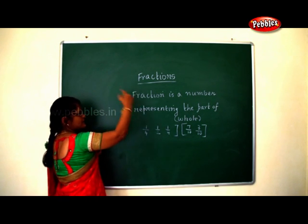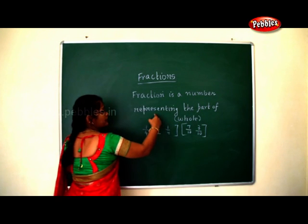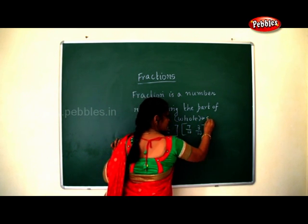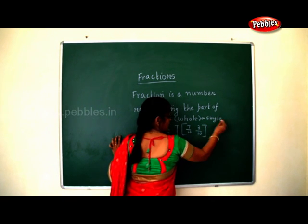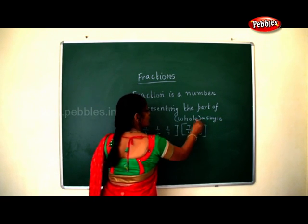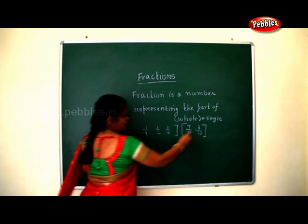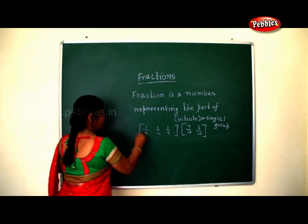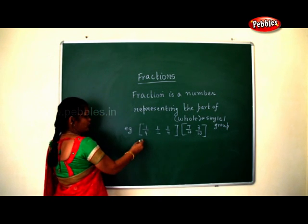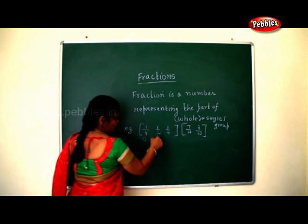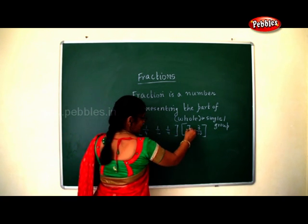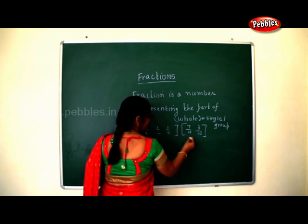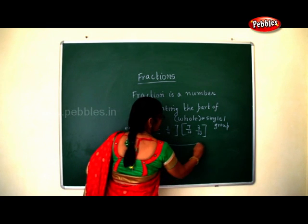I gave you an activity also — one by four, one by two, one by four — and the Gautam orphanage story — the cutting of the cake — seven by ten and three by ten. So this all is what you call a fraction.